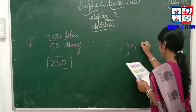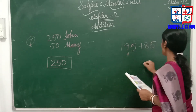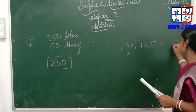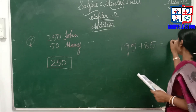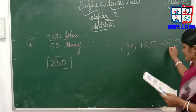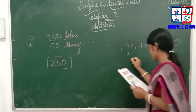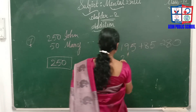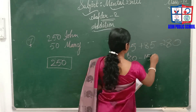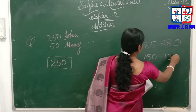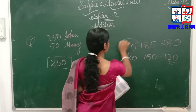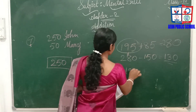195 plus 85 is 280. From 280 if you subtract 150, you get 130. So our answer is confirmed as 195.